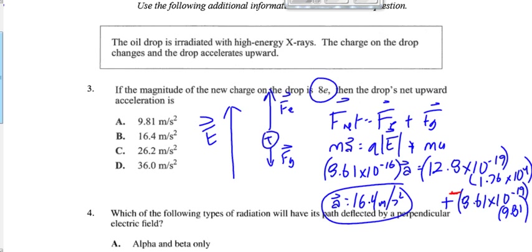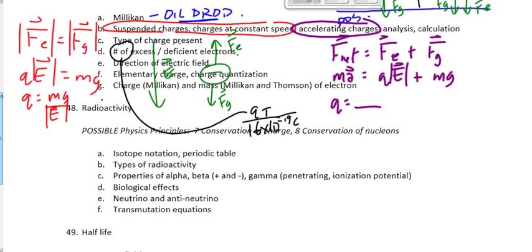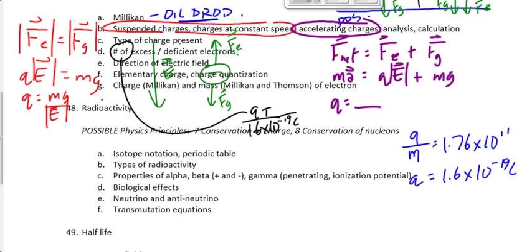Millikan found the charge of the electron. Combined with Thomson's analysis — Thomson found the charge-to-mass ratio, Millikan found the charge — the two of them together could find the mass. If you plug Millikan's charge into Thomson's results, you can find the mass, which works out to be 9.11 times 10 to the minus 31 kilograms.